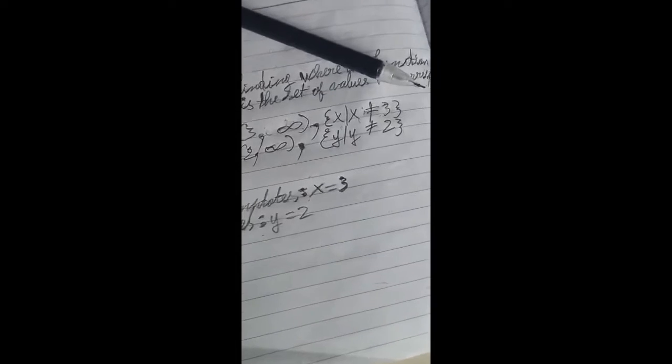Here are the horizontal asymptotes. The horizontal asymptote is x equals 3, and the vertical is y equals 2.